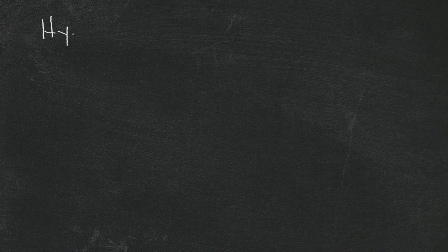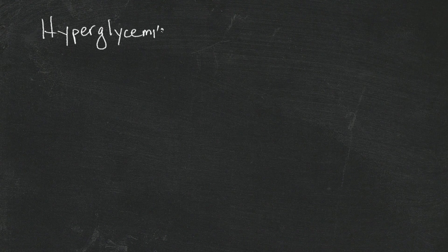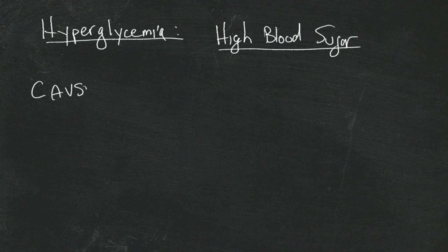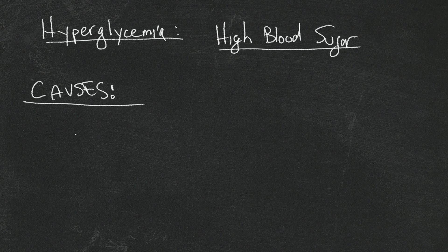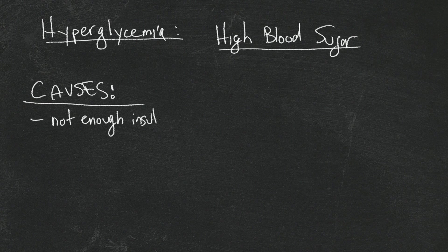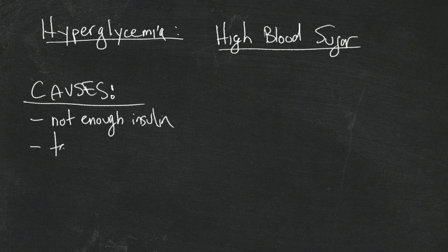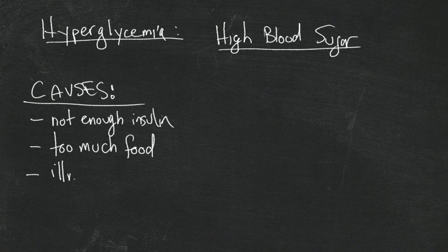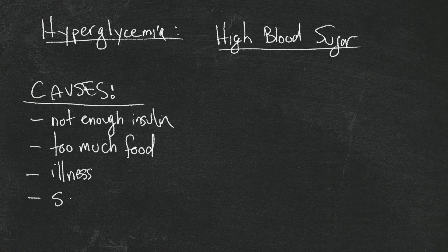The next part of hypo and hyperglycemia is hyperglycemia, or as the name implies, high blood sugar. What are some of the causes of high blood sugar? Well, it's quite the opposite of low blood sugar. Not enough insulin for whatever reason, too much food meaning you ate a lot and you didn't cover it adequately with enough insulin.